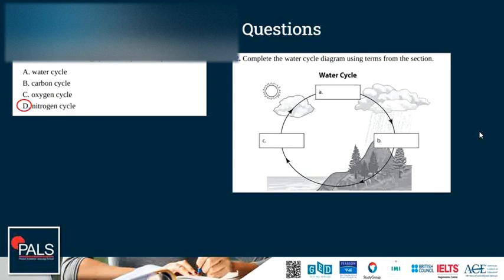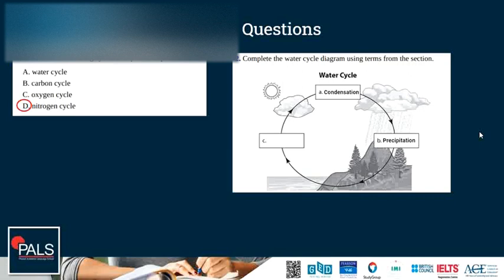Complete the water cycle diagram using terms from our presentation. For label A, we can see a cloud is forming — clouds are tiny water droplets. When water vapor changes into liquid water, this process is called condensation. Once a lot of water has condensed, larger droplets will form and it will start to rain. The term here is not rain, but precipitation. Then water in the oceans and other large bodies of water will slowly evaporate to form water vapor in the atmosphere again.